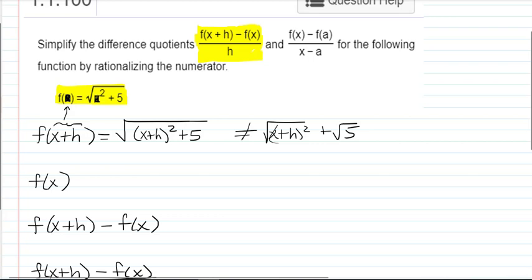In fact, we cannot simplify this. We could multiply out the x plus h and square, you know, foil it, but I'm going to wait and see if I need to do that. Sometimes it's necessary. Sometimes it's not. So let's just leave it in this form. f of x was our original function, which is the square root of x squared plus 5.